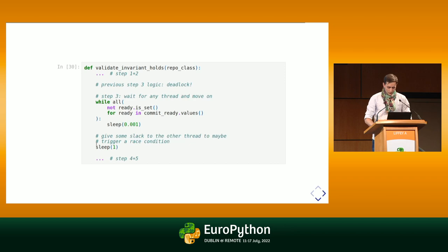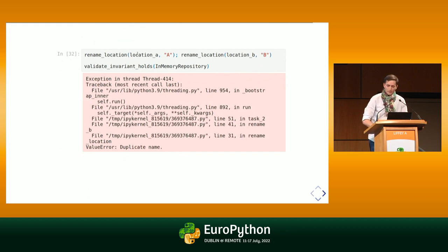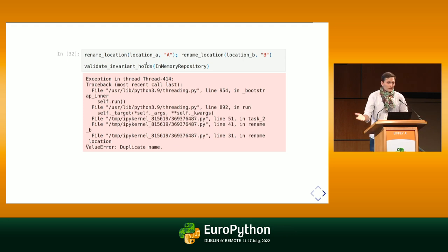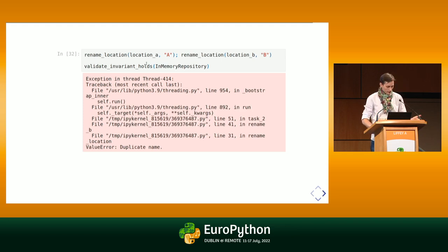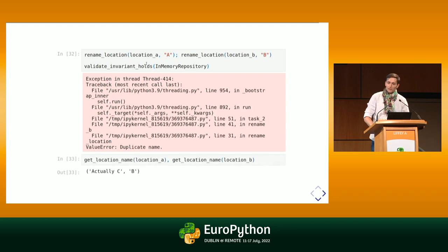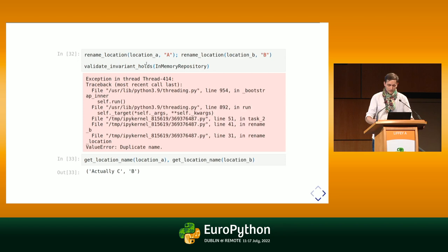Now if I reset my locations and try again to access the in-memory locations from two threads, I get an error in one of the threads — which is what I wanted to see, because now one thread is aware that it failed to carry out the operation. I didn't change anything in my test; I just added the lock. Looking at the actual values of both locations, only one was changed — location A — because it was the first thread I released. The race condition is fixed.